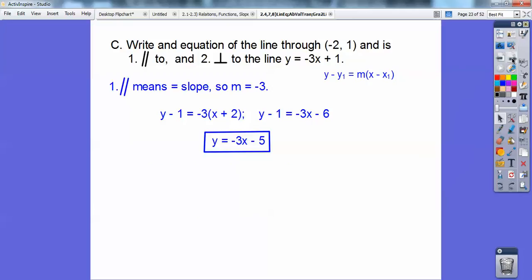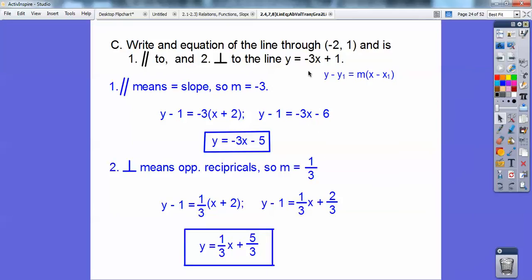Let's do the perpendicular part. Perpendicular means opposite reciprocal. So if that's the slope, then flip -3/1 and change the sign to positive 1/3. Put it in point-slope form, distribute the 1/3 through, and I get this is my final answer right there.